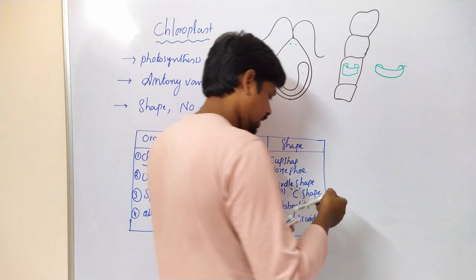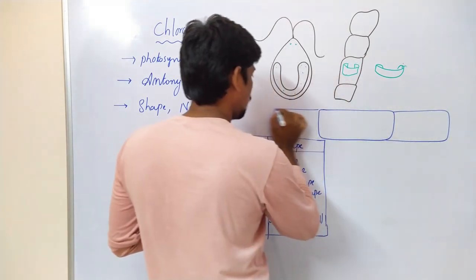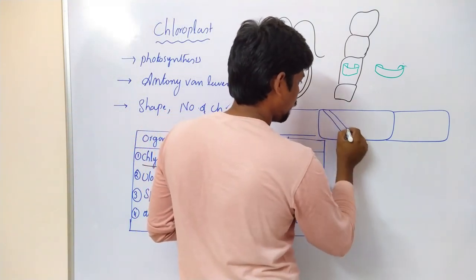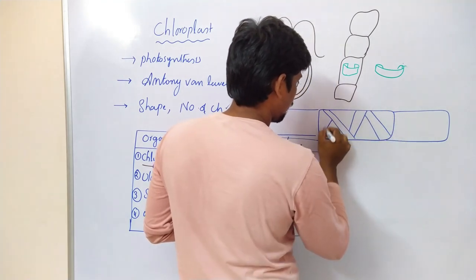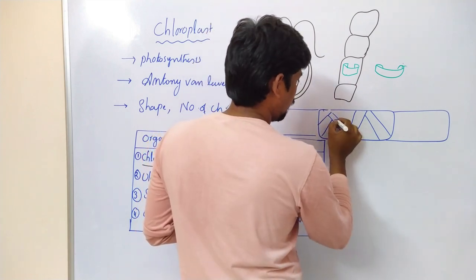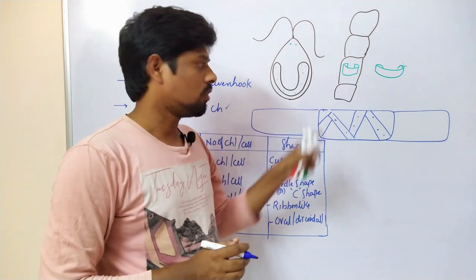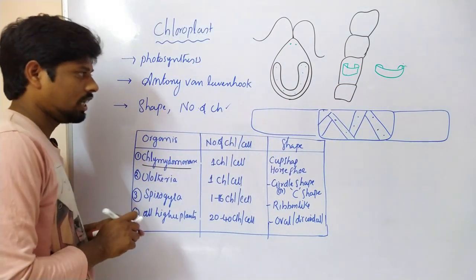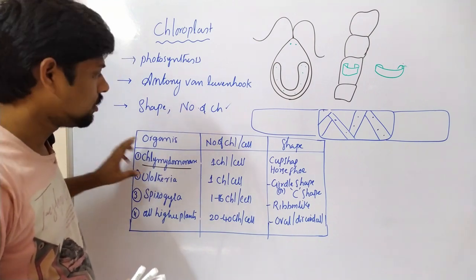Coming to Spirogyra - it is a filamentous structure. This filamentous structure contains chloroplast in a ribbon-like structure. So this is the ribbon-like structure. Here is a chloroplast, here is a chloroplast - different shapes. Here is a cup shape, here is a C-shape, here is a ribbon-like structure. This is all about the different kinds of chloroplasts which are present in different organisms, also different in number.